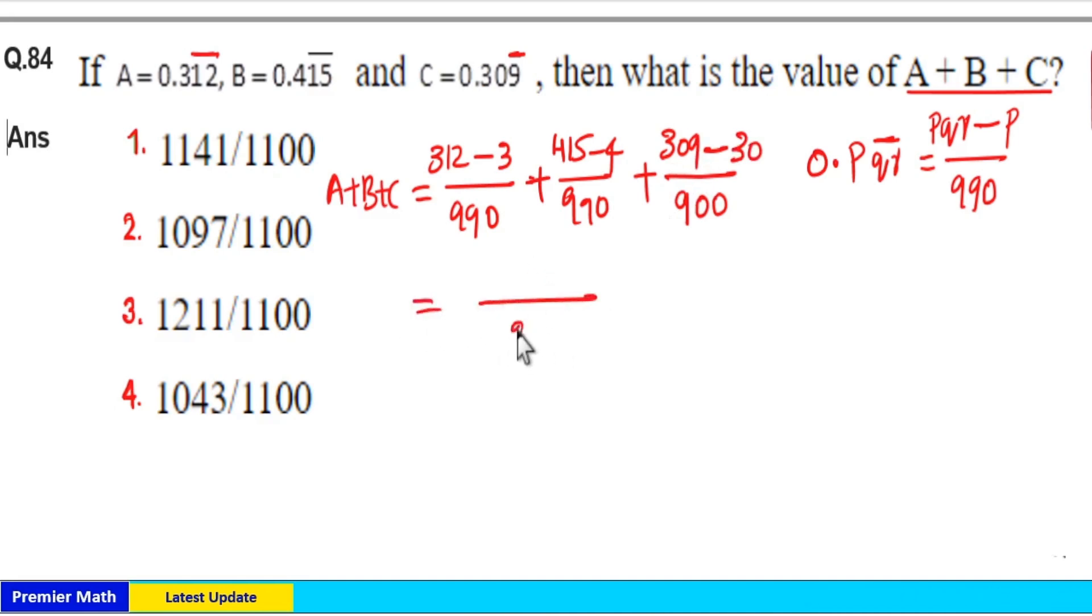And if you take the sum, 990 common denominator for first two terms. And here this is 312 minus 3 is 309. 415 minus 4 is 411. So 411 plus 309 is equal to 720 plus here 309 minus 30 is 279. And here you have 900.